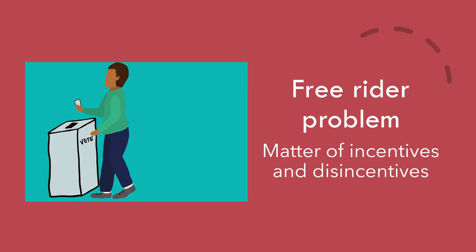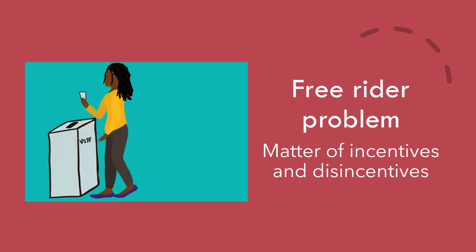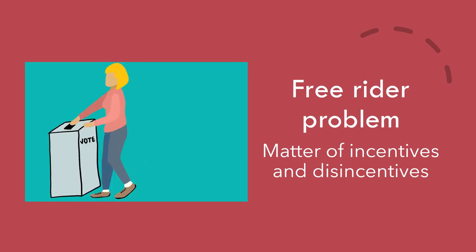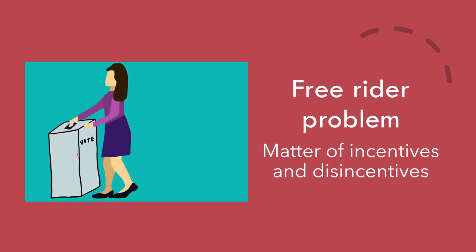Another example is voting. Some people vote because they think it's something that is good. Some people do not vote because they think it's a waste of their time — that others will vote for who is good anyway. A low voter turnout proves the failure of collective action as undeserving candidates are voted into office because many people did not participate in the decision-making.